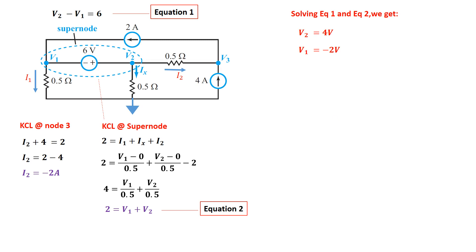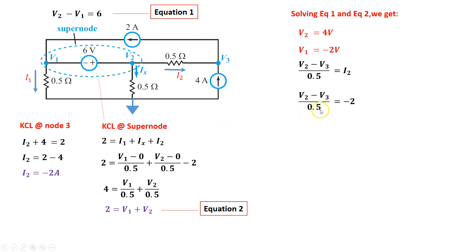Now let's calculate V3. I2 has current flowing from V2 toward V3, so V2 minus V3 divided by 0.5 equals I2. Substituting I2 as negative 2: V2 minus V3 equals 0.5 times negative 2, which is negative 1. We know V2 is 4 volts, so 4 minus V3 equals negative 1, meaning V3 equals 5 volts. So we've now found all three node voltages.